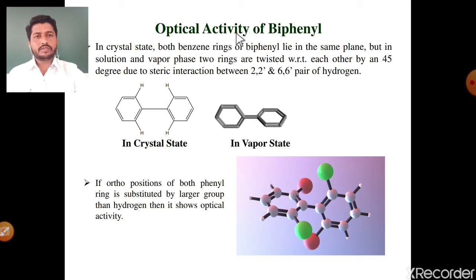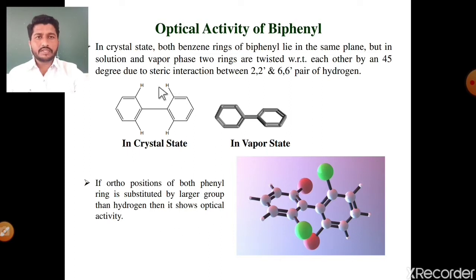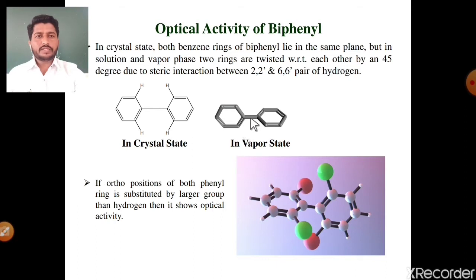Due to this rotation it shows optical activity. If the ortho positions of both phenyl rings are substituted by a group larger than hydrogen, it shows optical activity. If these ortho-substituted hydrogens are replaced by a larger group — such as nitro group, carboxylic acid group, or sulfonic acid group — then it shows optical activity. The free rotation about this carbon-carbon single bond is more restricted compared to when only hydrogen is present.